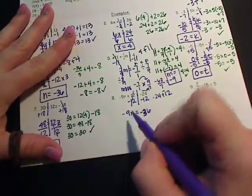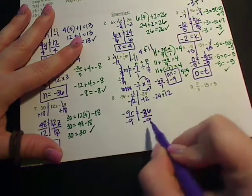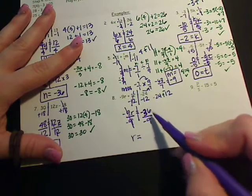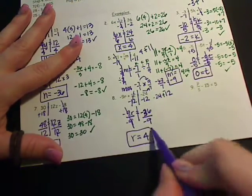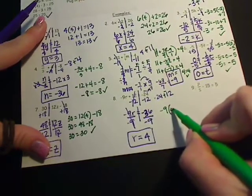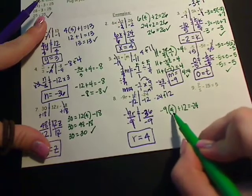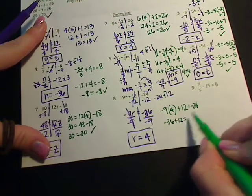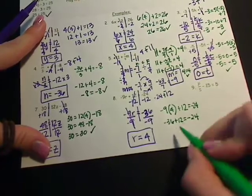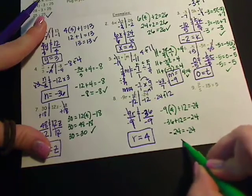Now I'm going to isolate my variable. The opposite of multiplying by negative 9 is dividing by negative 9. What I do to one side, I have to do to the other. My 9's cancel, I'm left with r. Negative 36 divided by negative 9 is positive 4. So r equals 4. Let's plug it back in — negative 9 times 4 plus 12 should equal negative 24. Negative 9 times positive 4 is negative 36. Plus positive 12 — signs are different, so the difference is 24. I have more negatives, so negative 24 equals negative 24. We did it right.